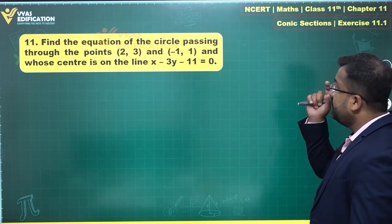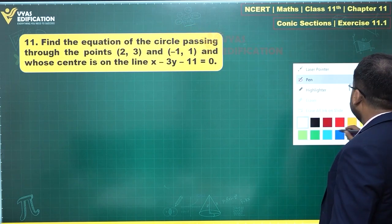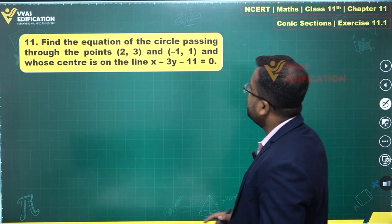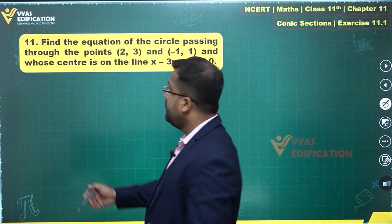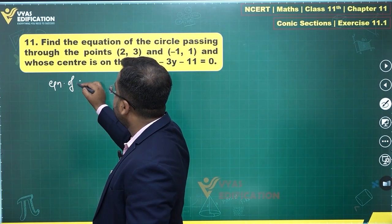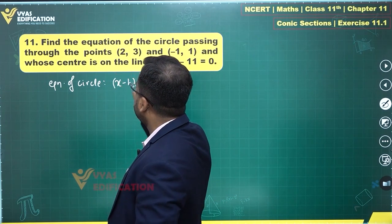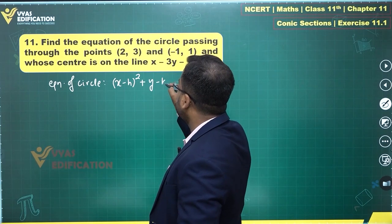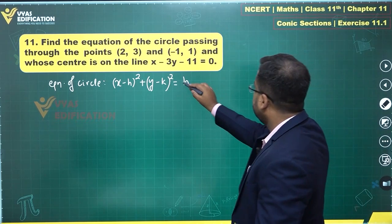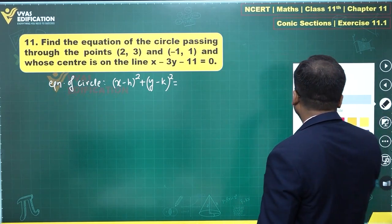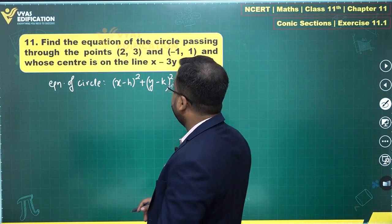Question 11 asks: find the equation of a circle passing through the given points, whose center is on the given line. Equation of circle passing through points, with center on the line — a similar question to the previous one. Let the equation of circle be x minus h whole squared plus y minus k squared equals r squared. Center is h comma k and radius is r.